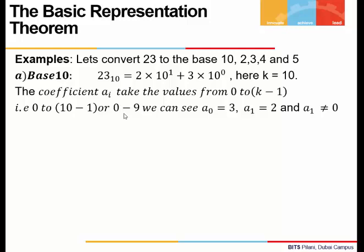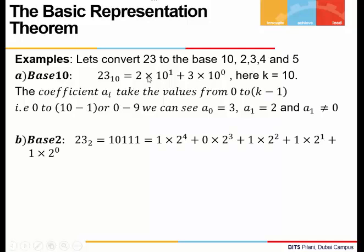We know that 23 is nothing but 2 times 10 to the power 1 plus 3 times 10 to the power 0. We've represented 23 to base 10. This is our decimal representation. Here the base k is 10. We can see the coefficient of the highest power of 10 is non-zero because we have 2, and all other coefficients, 2 and 3, are from 0 to 9. The coefficients take values from 0 to k minus 1. So here, a_0 is 3 and a_1 is 2.